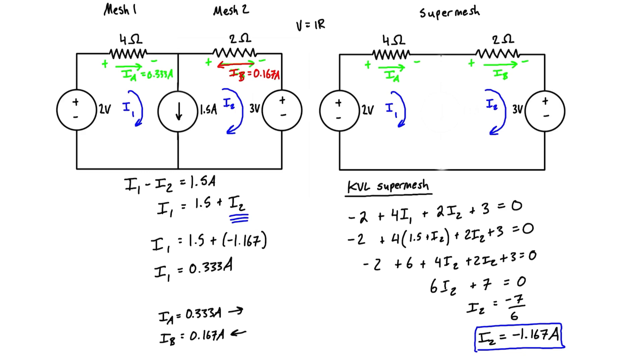So that's how you do supermesh analysis. Anytime you see a current source between two meshes or two loops, and you're asked to use mesh analysis, or you want to use mesh analysis, just know that it will become a supermesh problem. You're basically going to have to use this to find the relationship between the mesh currents on each side, and then you're going to have to remove it, and then basically treat the whole thing as one big giant mesh, and then you're going to have the same number of unknowns as you have equations, and you'll be able to solve for the mesh currents, and ultimately the branch currents.